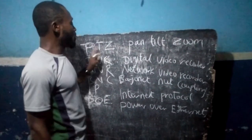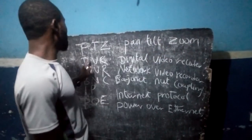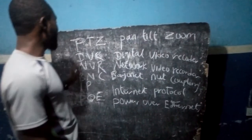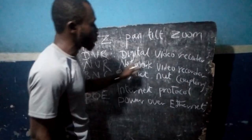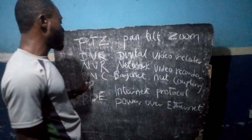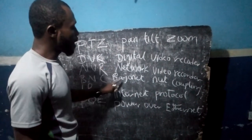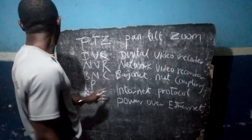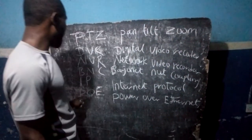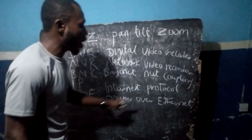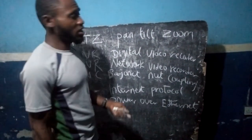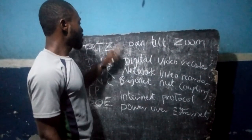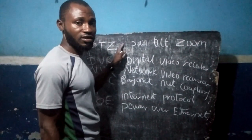Whenever you see PTZ, it simply means Pan, Tilt, Zoom. Whenever you see DVR, it simply means Digital Video Recorder. Whenever you see NVR, it simply means Network Video Recorder. Whenever you see BNC plug, it simply means Bayonet Knot Coupling. Whenever you see IP, it means Internet Protocol. And whenever you see PoE, that means Power over Ethernet. Thank you, and you are welcome. This is the first edition of the CCTV installation training.